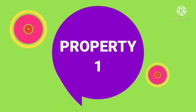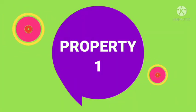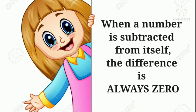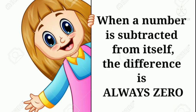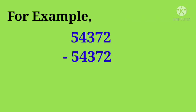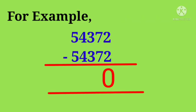Property 1: When a number is subtracted from itself, the difference is always 0. For example, 54372 minus 54372 gives 0 as the final answer.